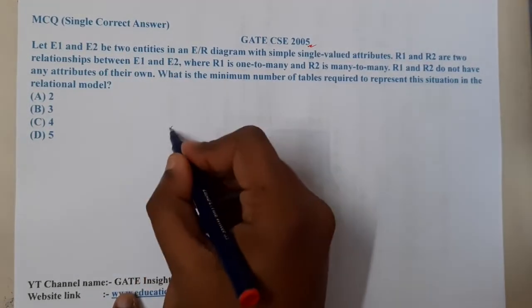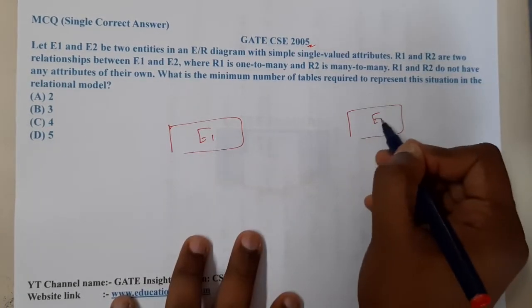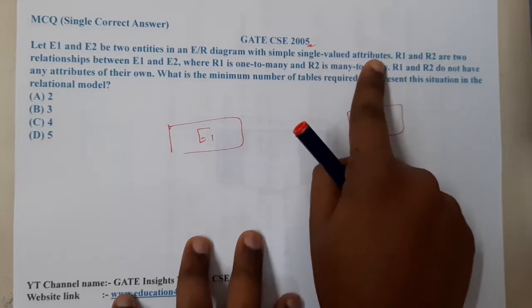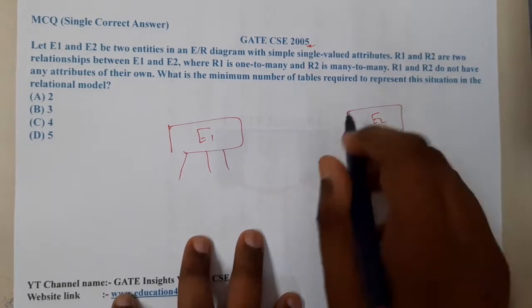two entities of an ER diagram. So E1 is an entity, E2 is an entity, with simple single-valued attributes. They are just having single-valued attributes; they did not give any names or anything.